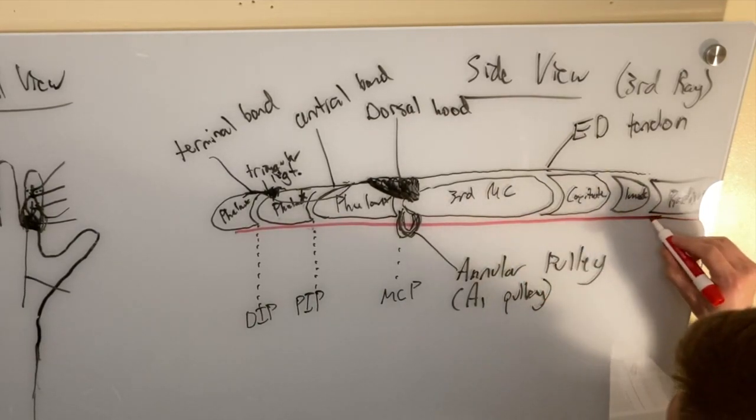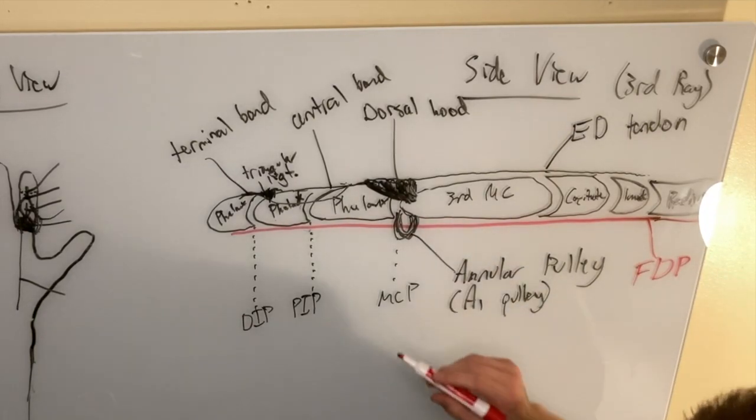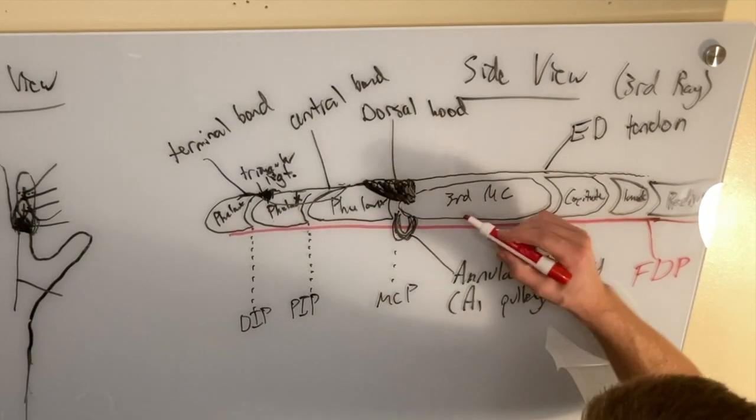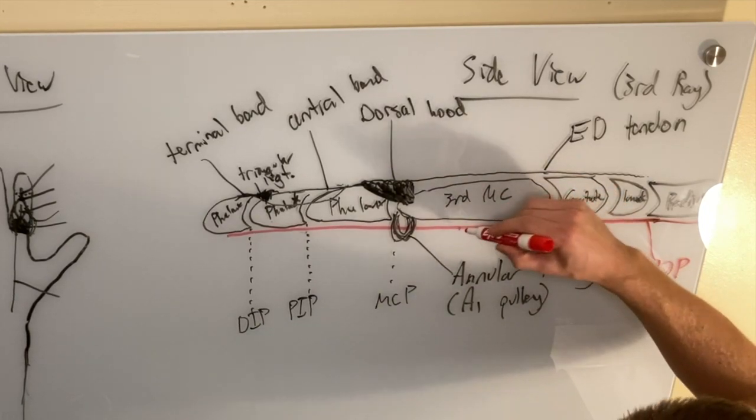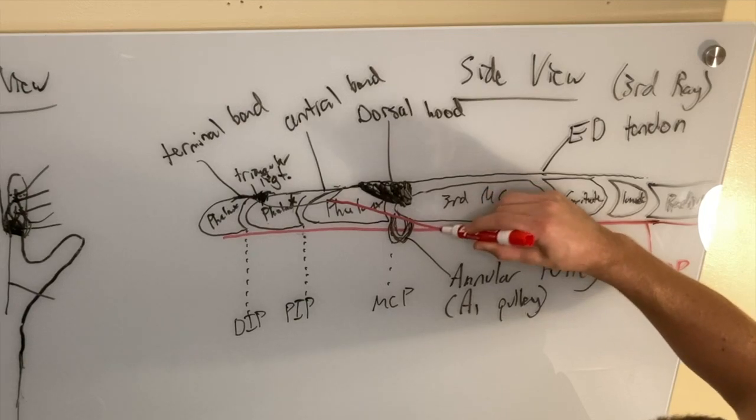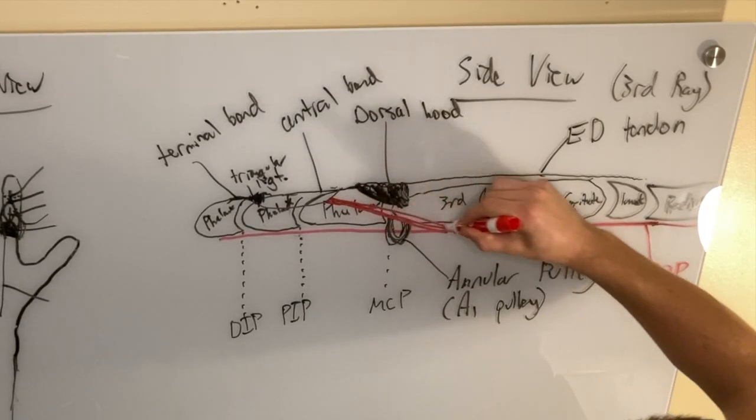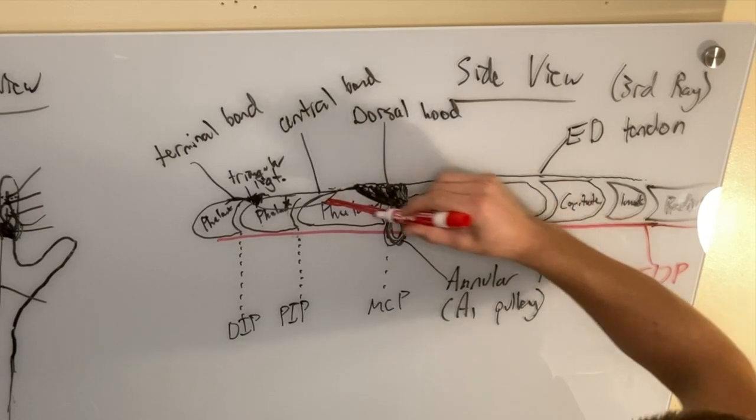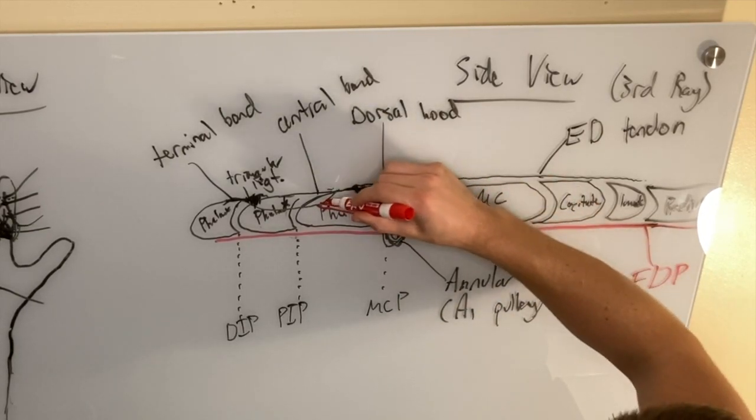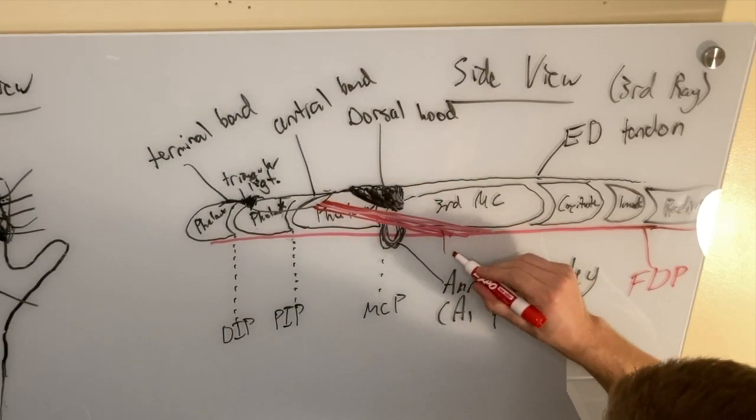So this is flexor digitorum profundus. So those are coming off of the tendon and landing onto the lateral band. So let's just start there. So this is, this would be the lumbrical.